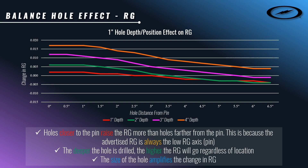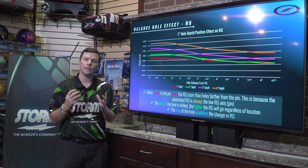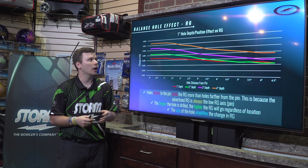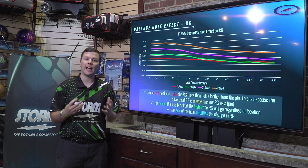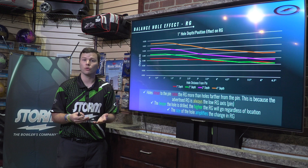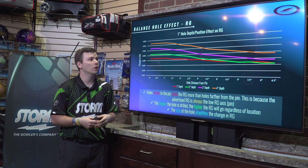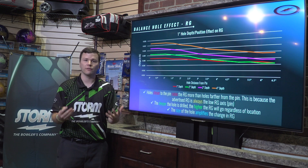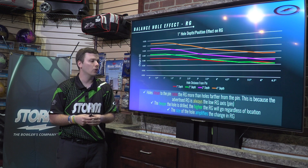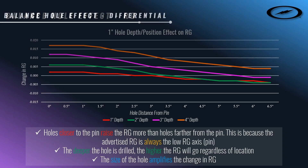Lastly, the size of the hole is going to amplify the change in RG value. If you look at the title of the graph, that's a one-inch diameter hole throughout. If we change that to a half-inch hole, these lines are going to be significantly closer together. Likewise, if we go up to an inch and a half size hole, those lines are going to be significantly further apart. So the hole size amplifies the change in RG value.